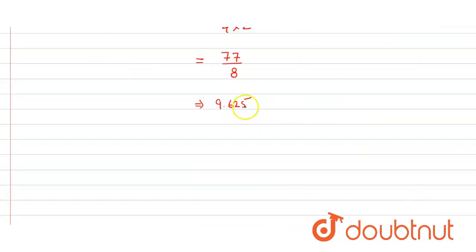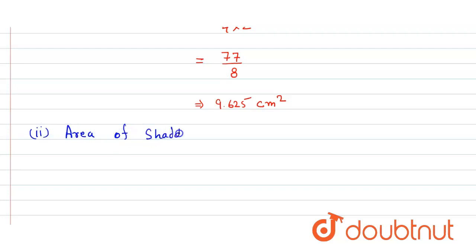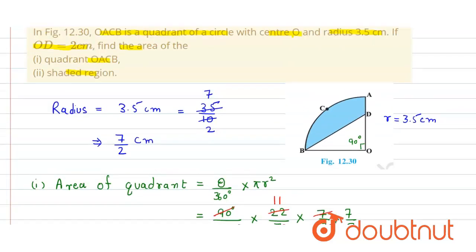Similarly, for the second part, the area of the shaded region, as shown in the figure, equals the area of quadrant OACB minus the area of right angle triangle BOD.